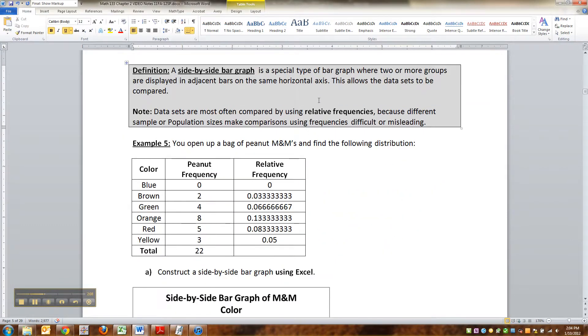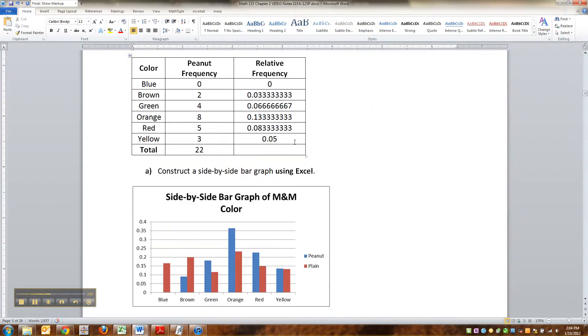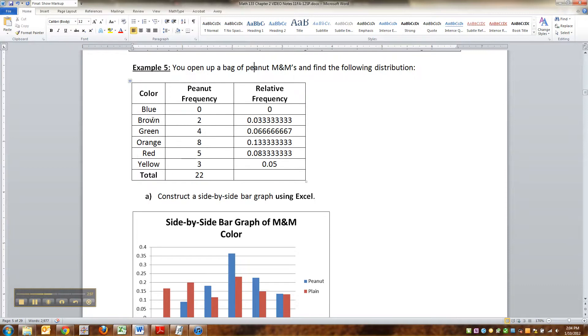A side-by-side bar graph is a special type of bar graph where two or more groups are displayed in the same graph, but in adjacent bars. So in general, we use relative frequencies for these. Not always, but most of the time, you'll use relative frequencies because different sample or population sizes make comparison of frequencies difficult or misleading.